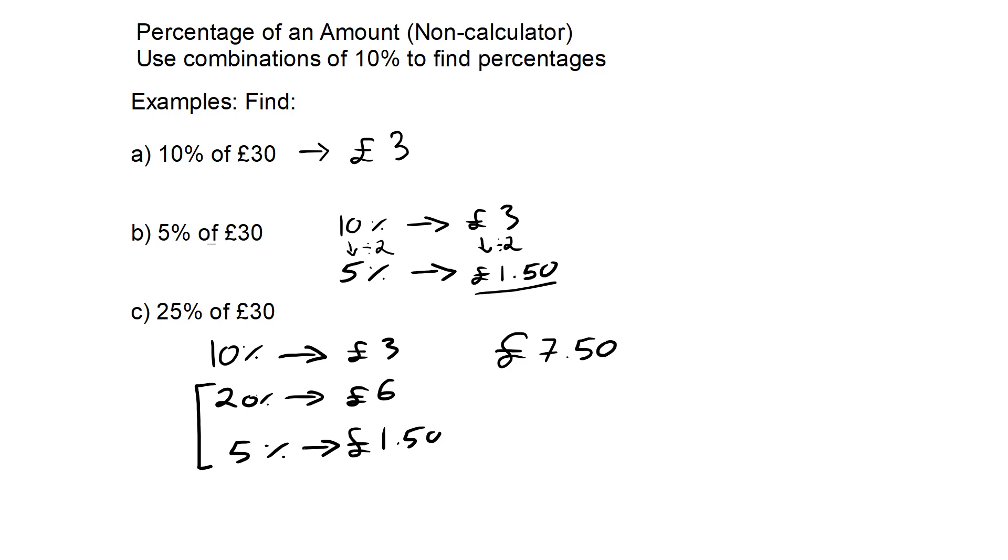You might remember, however, that 25% is a quarter, so we could also do one quarter of £30. This means we divide 30 by 4. 30 divided by 4: 4 into 3 goes 0 remainder 3, 4 into 30 goes 7 times with remainder 2, 4 into 20 goes 5, which gives us the same answer of £7.50.